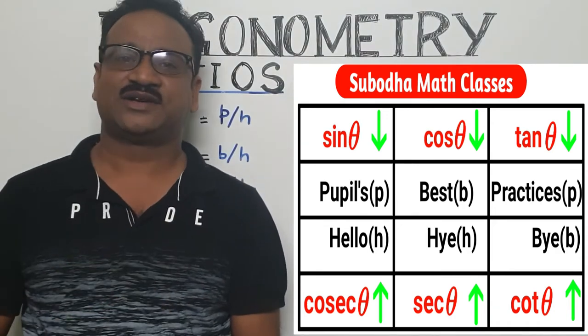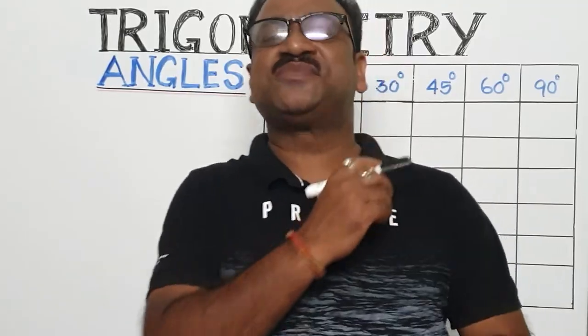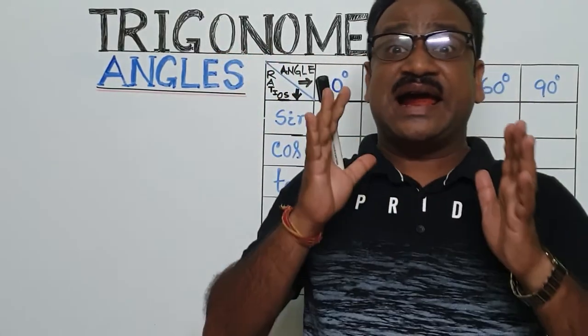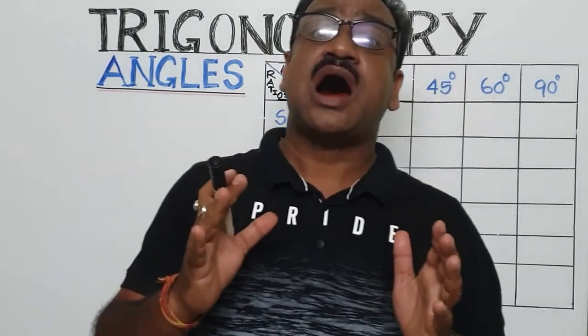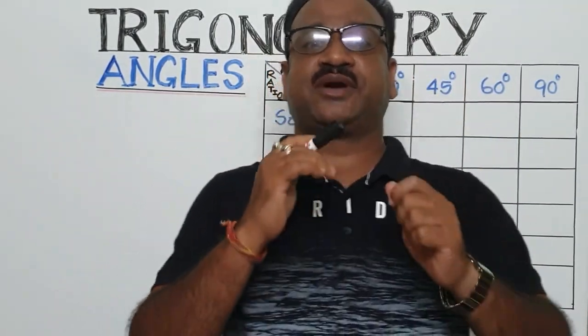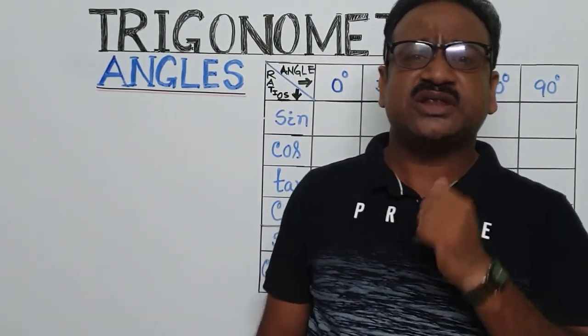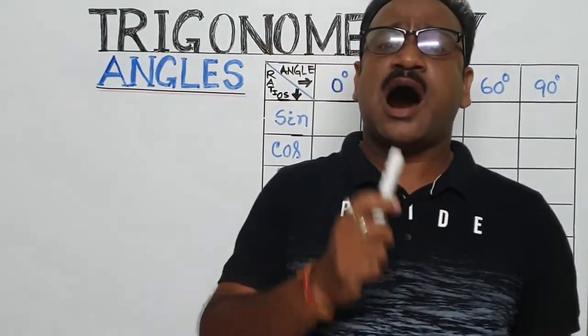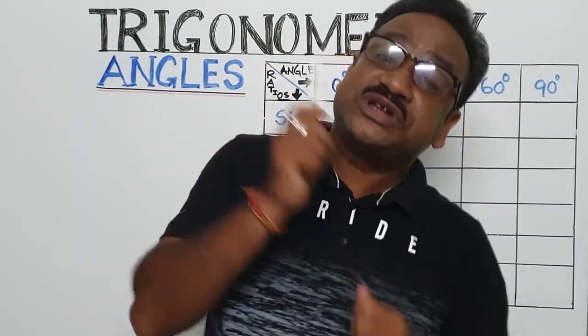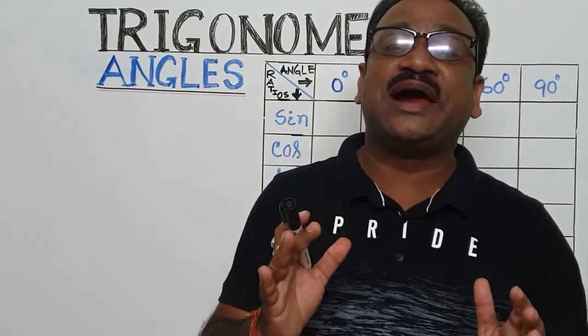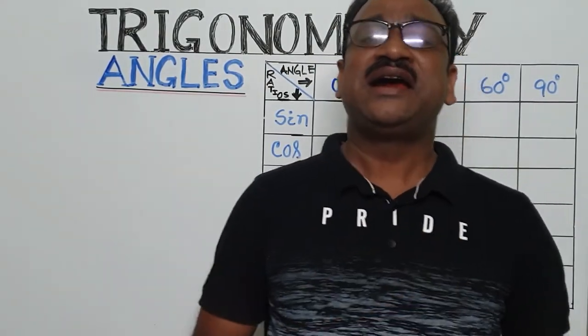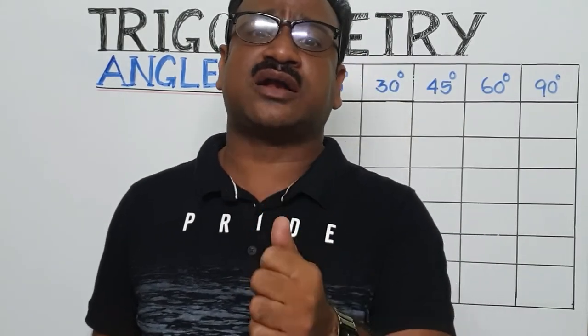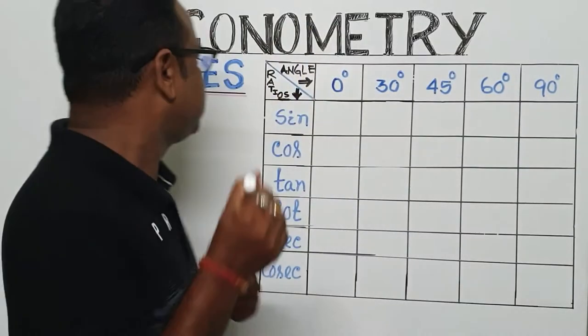Keep it in mind, so it will not create any confusion. People's Best Practices - Hello, Hi, Bye. Take the first letters P, B, H and just sin θ, cos θ, tan θ, cot θ, sec θ, cosec θ. In the upper head you will get sin, cos, and tan. In the lower head you will get cot, sec, and cosec.